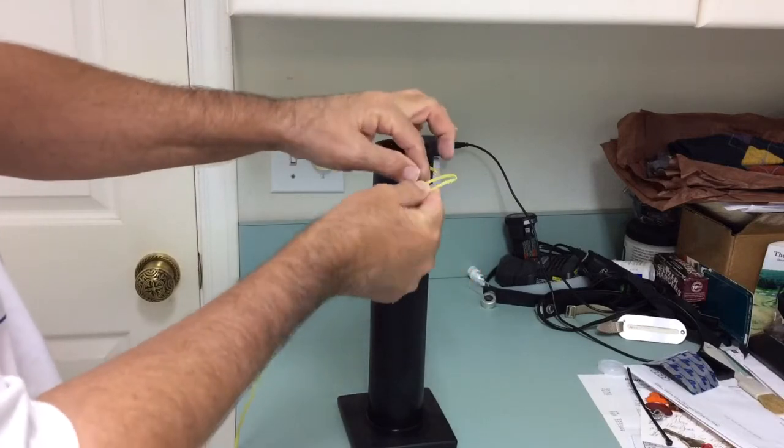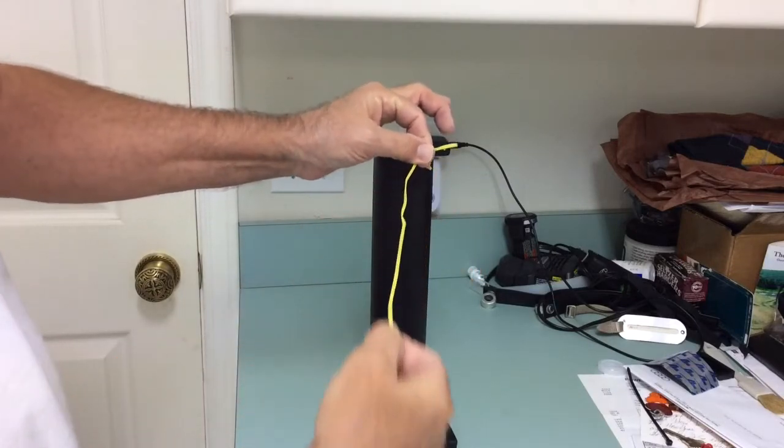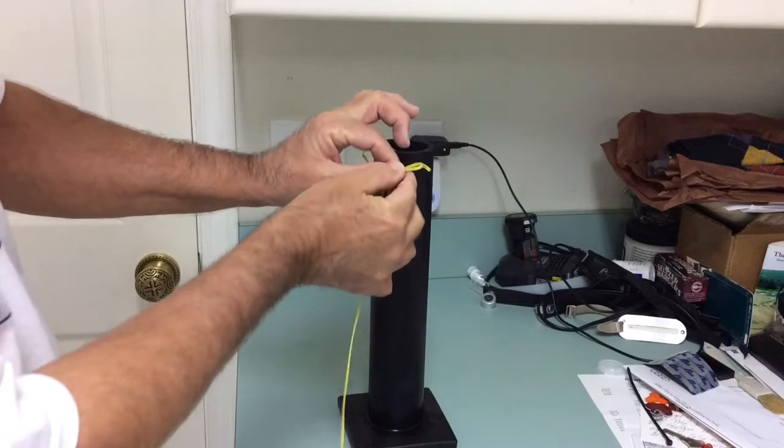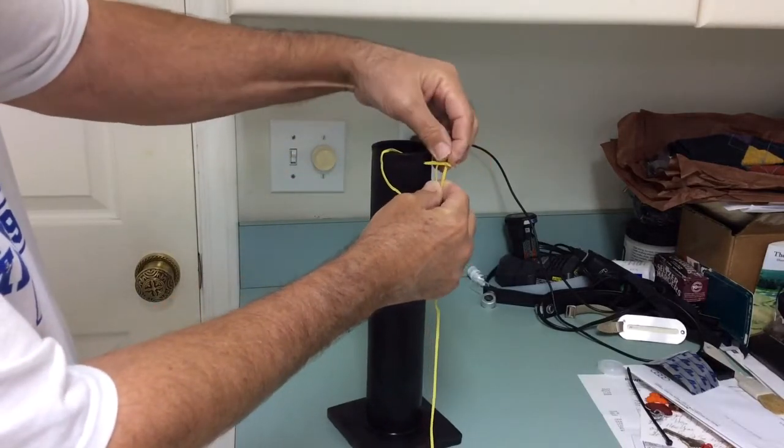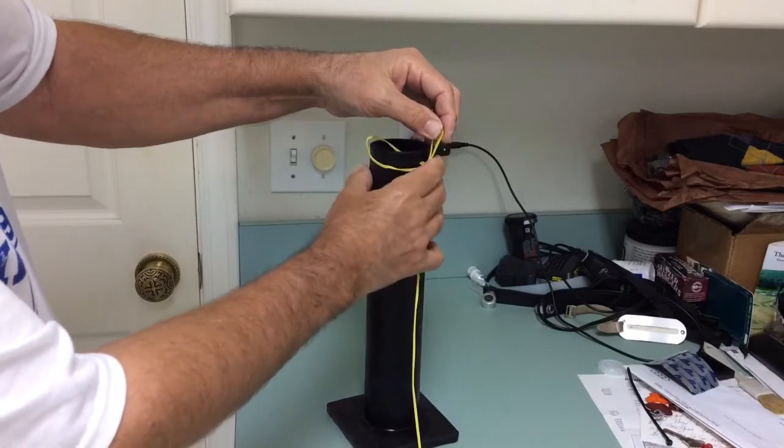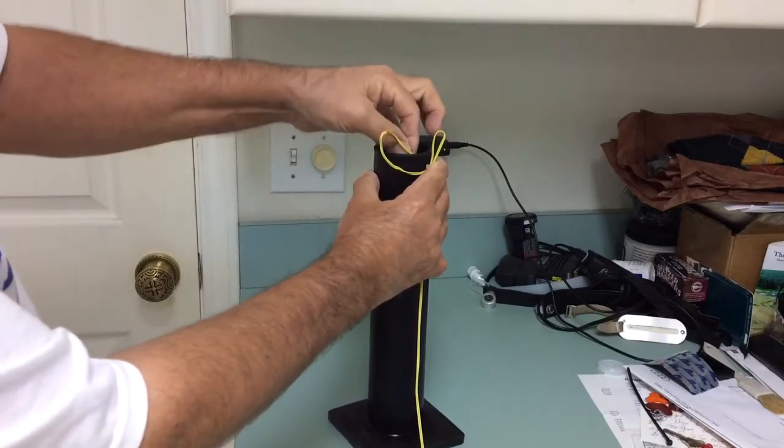Make another loop in the wire that's going to the module, pass it through that loop, and then tighten it by pulling from inside the mortar.